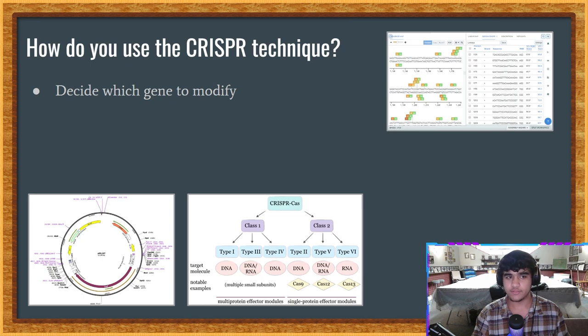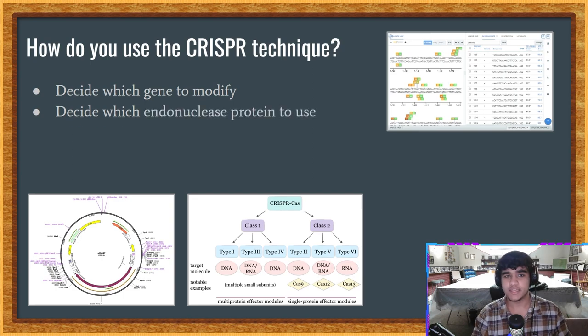And there are more enzymes than just Cas9 which can be used for genome engineering. For example, CPF1 is another class 2 endoribonuclease that is used for procedures like this, as you can see down here, the class 2.